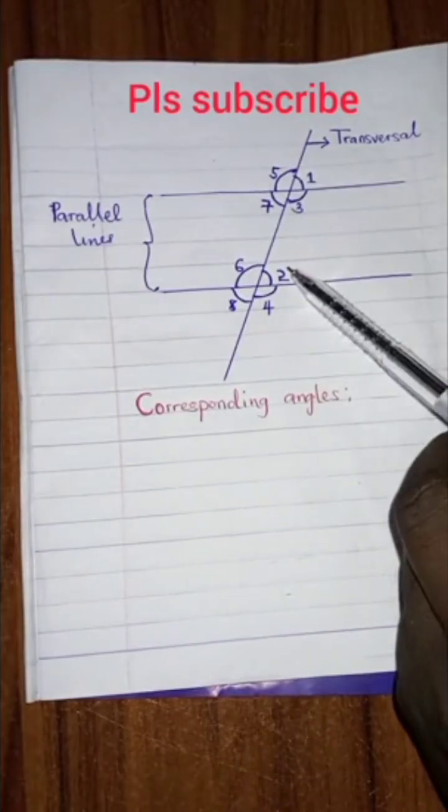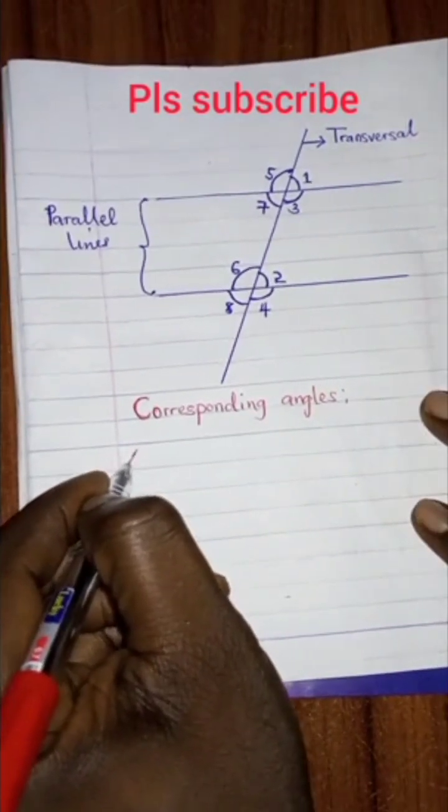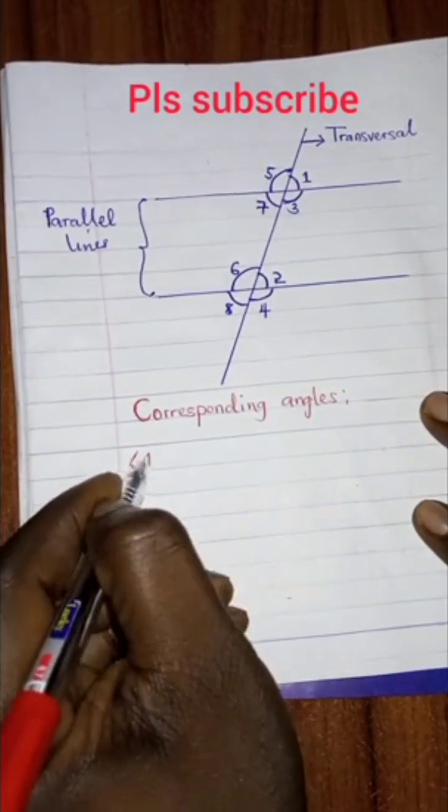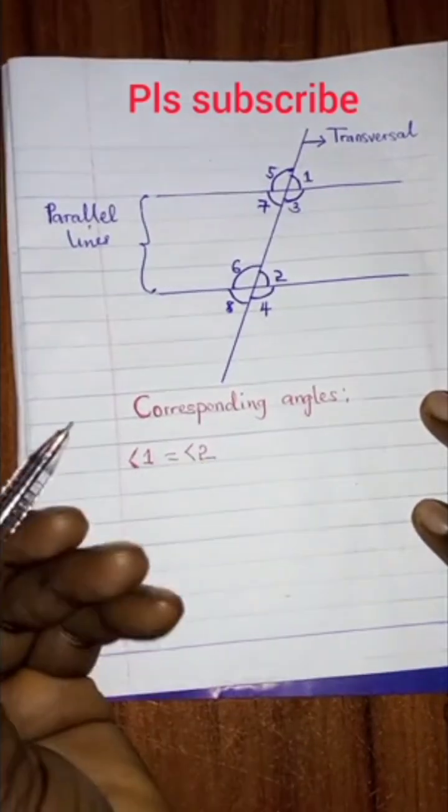Corresponding angles are angles that lie on the same position. From what you can see here, angle 1 equals angle 2 because they lie on the same position.